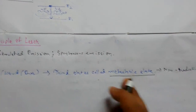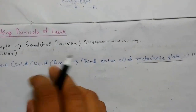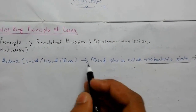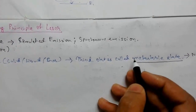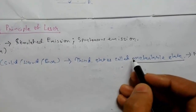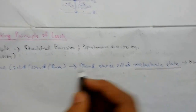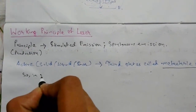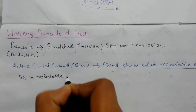As we have already discussed, the lifetime of an atom in the excited state is 10 to the power minus 8 seconds. But here, the lifetime in the metastable state will be greater than that of the excited state.